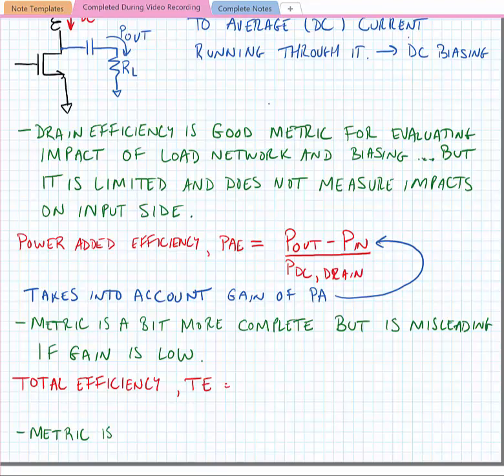The next metric is the total efficiency, and this is the metric that I prefer to use when I'm comparing amplifiers. Total efficiency is equal to P out of the PA divided by the PDC of the drain plus the input power. So all we've done is move the input power from the numerator to the denominator.